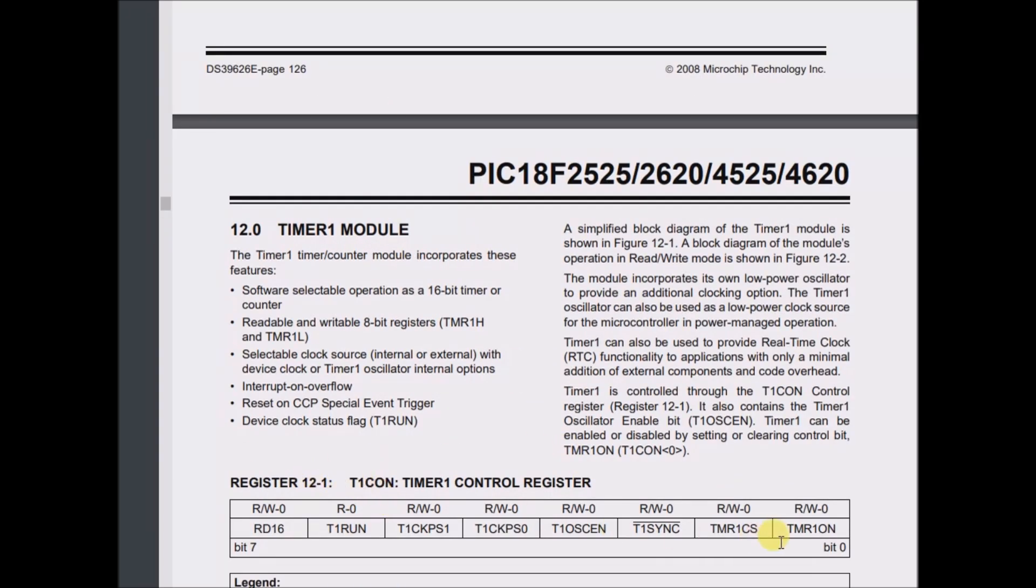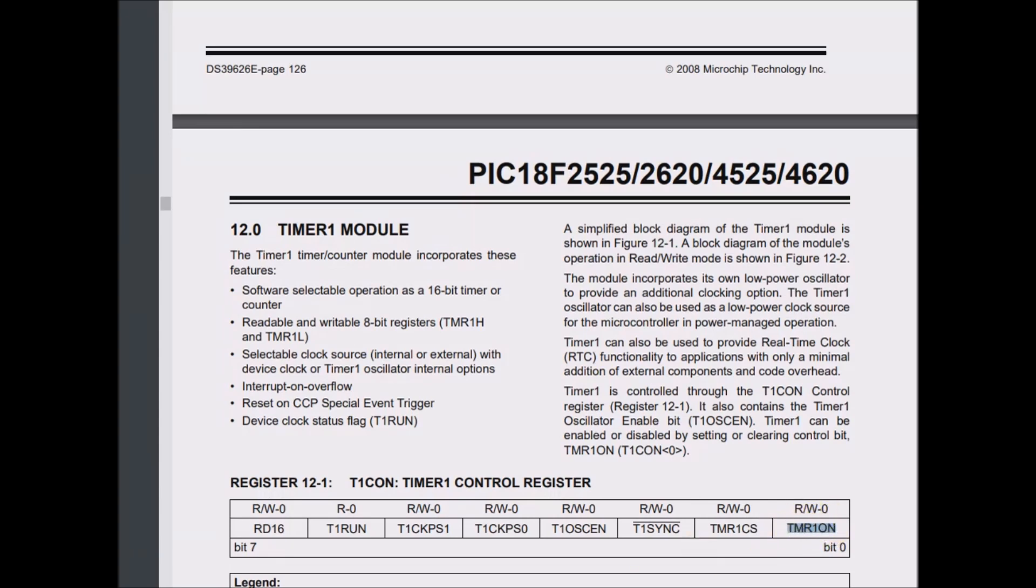I zoomed up to T1Con, it has a similar type of bit as the least significant bit. But just for comparison's sake, T0Con, Timer 0, had this enable timer or stop timer bit as bit 7.